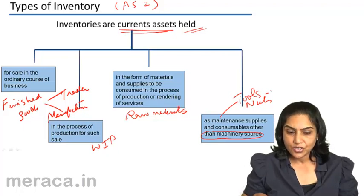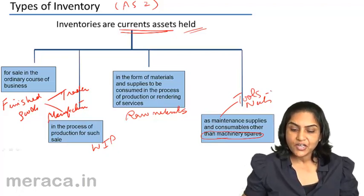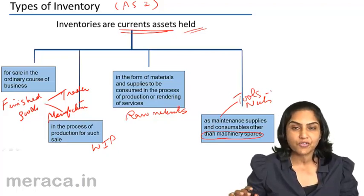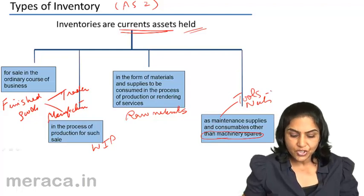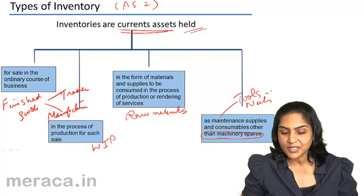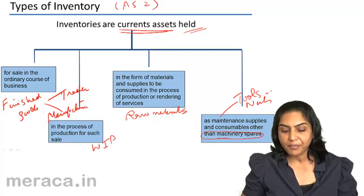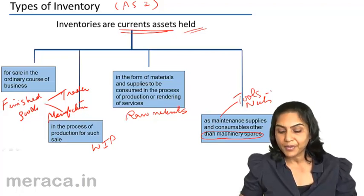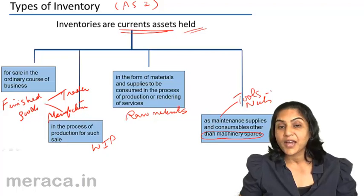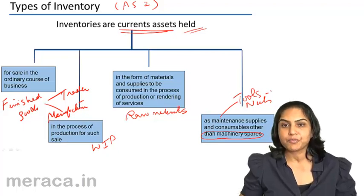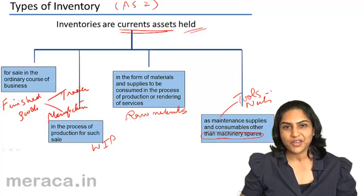Thus, to summarize: inventories are current assets held for sale in the ordinary course of business — that is, finished goods; or in the process of production for such sale — work in progress; or in the form of materials and supplies to be consumed in the process of production — raw materials; or maintenance supplies like tools and nuts. Specific machinery spares would be excluded from the scope of inventories — they are a part of fixed assets.